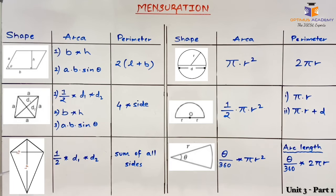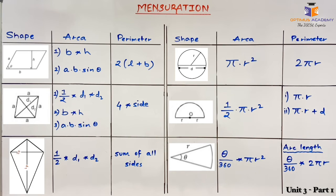The next shape is a kite. The area of a kite is half × product of diagonals, that is D1 × D2. Note that the area formula of a kite and rhombus is the same, but the two shapes are very different from each other. The perimeter of a kite is the sum of all four sides.